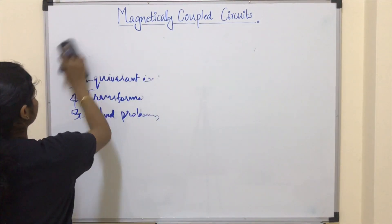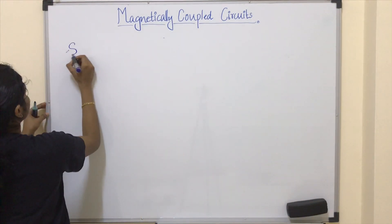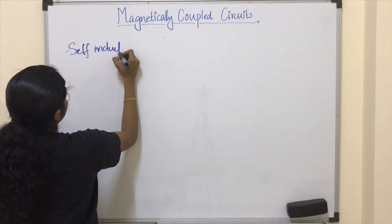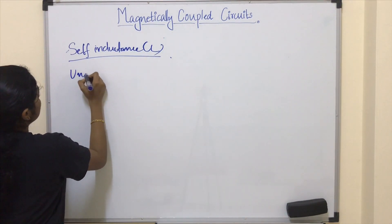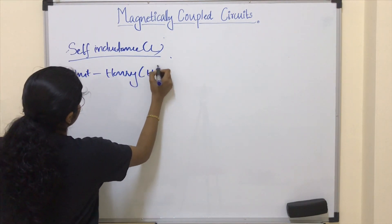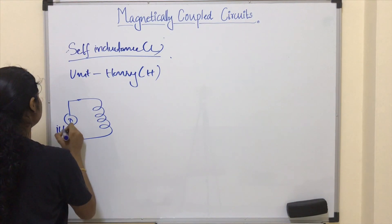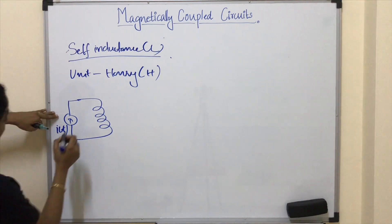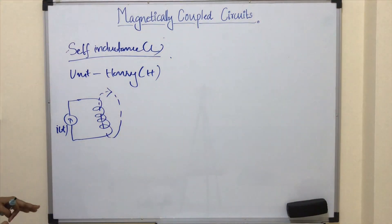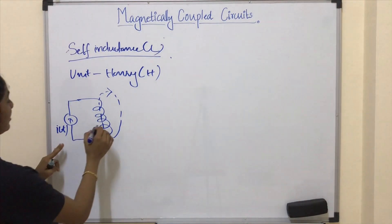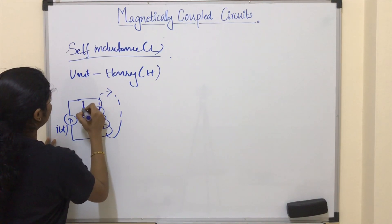Let us start with the introduction: self inductance. The unit of self inductance is henry, denoted by H. Consider a coil L1 excited by a time varying current i(t). Due to this time varying current, a magnetic flux is generated, and according to Faraday's law of electromagnetic induction, whenever the magnetic flux linked with a coil changes, an EMF is induced in it.